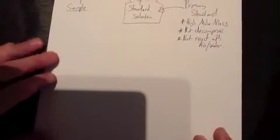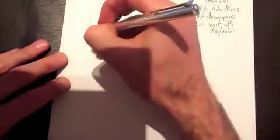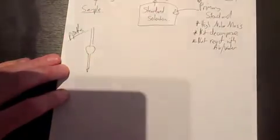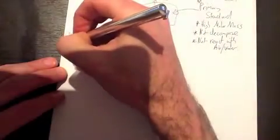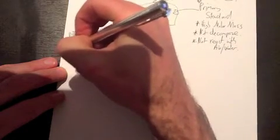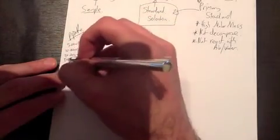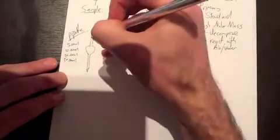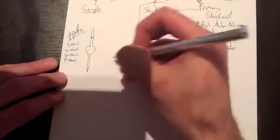Moving on to a titration. With a titration, you're using a few different instruments. You're using a pipette - basically it delivers a set amount of liquid. These can be 5.00 mL, 10.00 mL, 20.00 mL, 50.00 mL, and so on. These are accurate to two decimal places if you fill it up properly. It's got a line at the end - you fill it up to that line and transfer it into a conical flask.